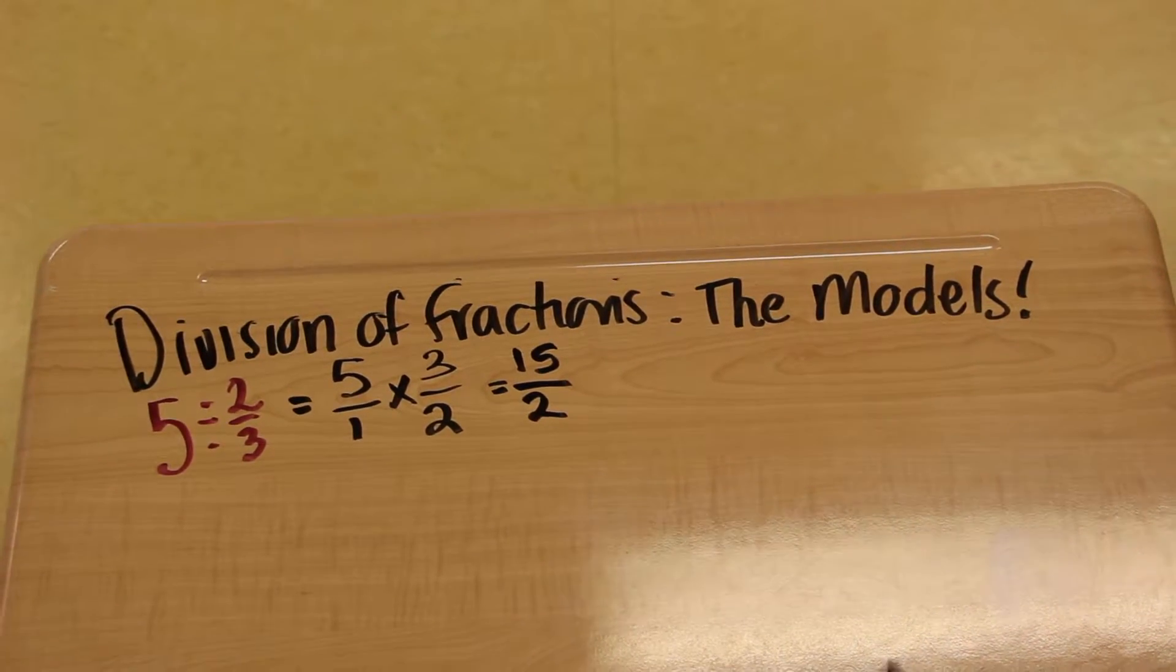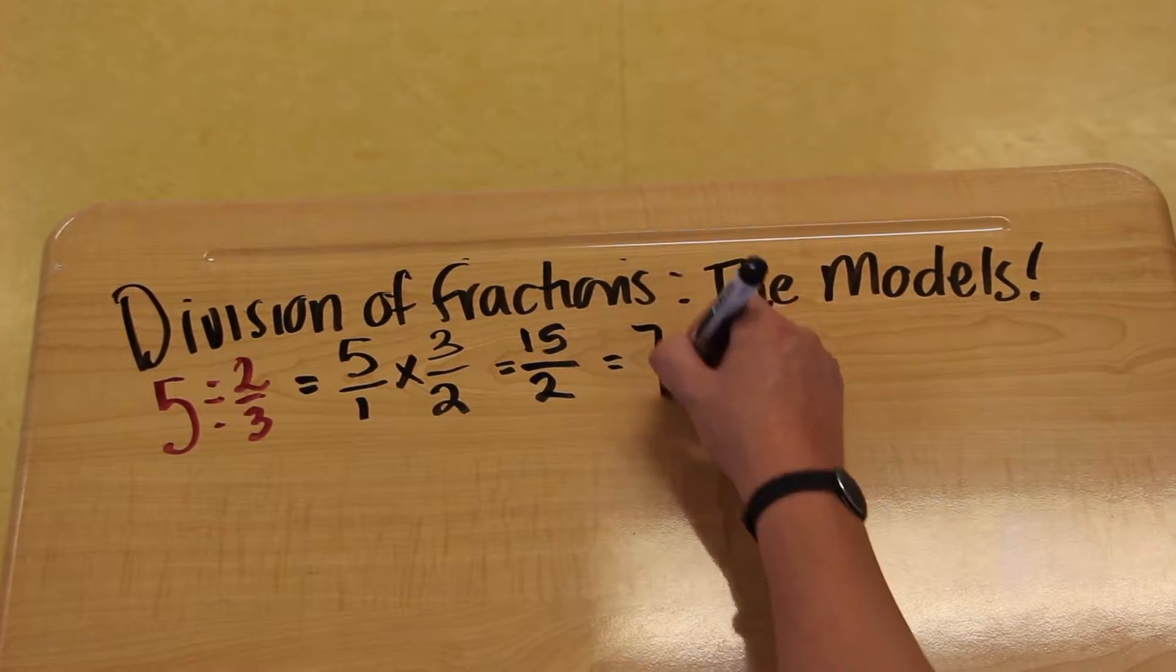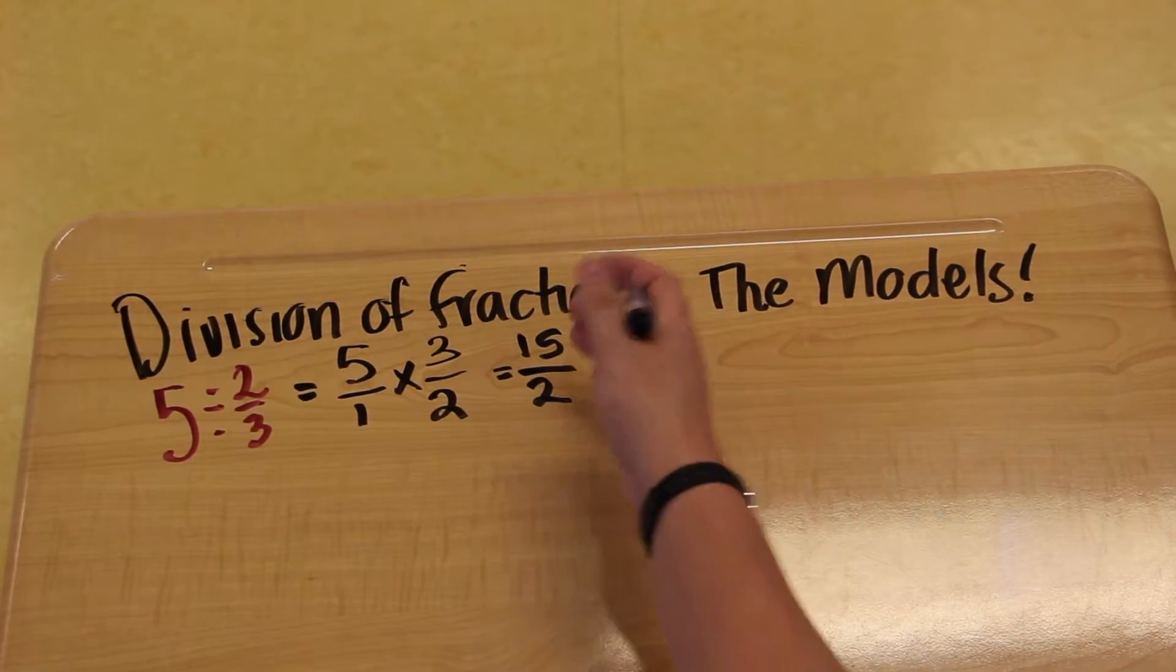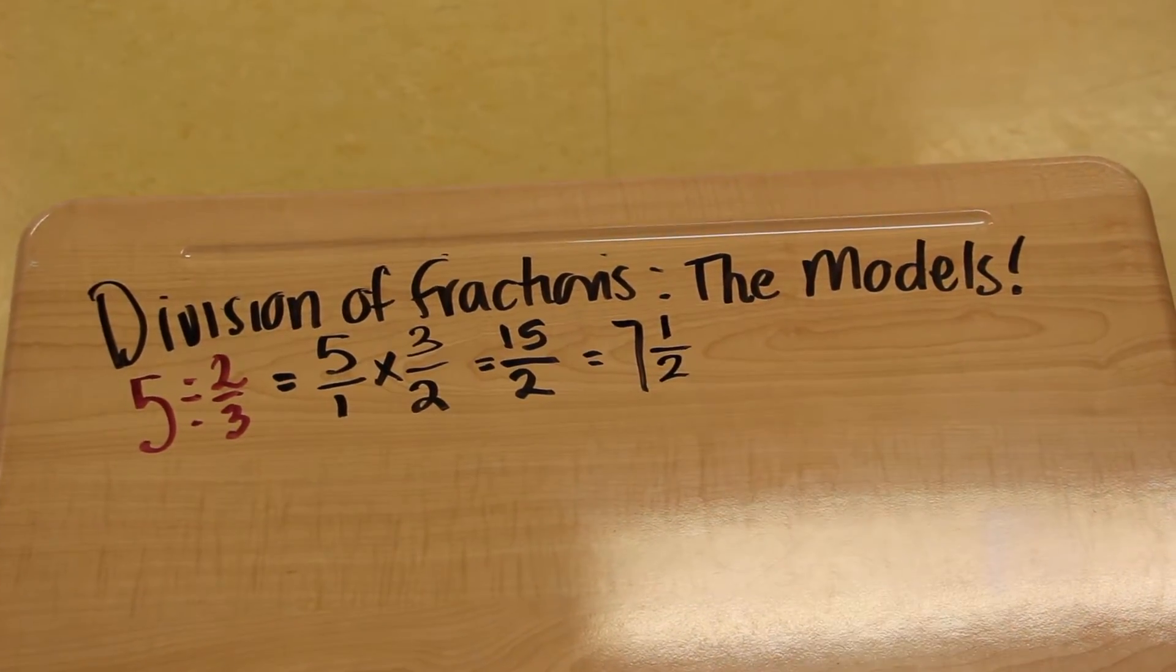That is an improper fraction that I have to convert to a mixed numeral. 2 goes into 15 seven times for 14. 15 take away 14 leaves us with 1 over our original 2.